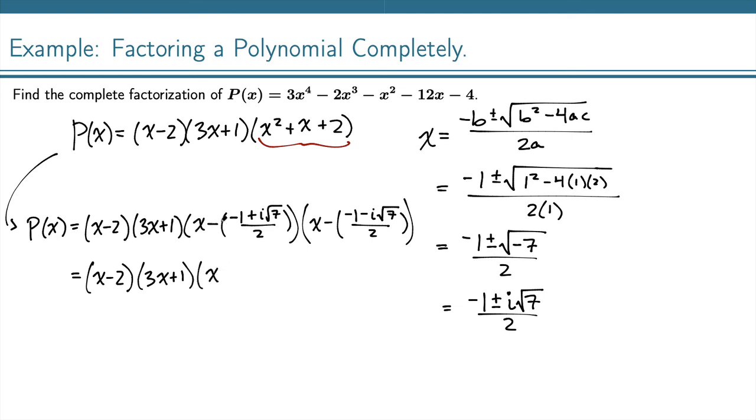So I have x + (1 - i√7)/2, and then for this next one, x + (1 + i√7)/2.